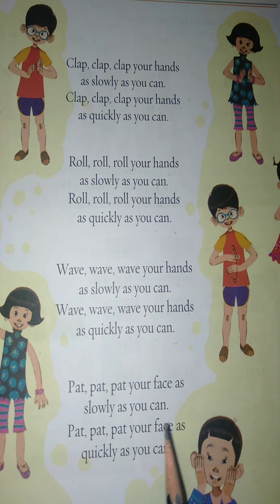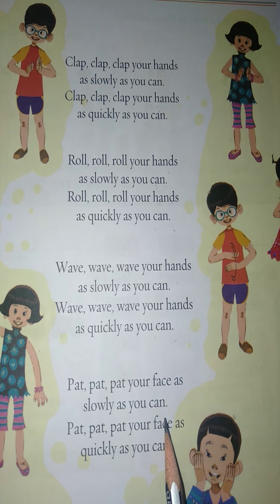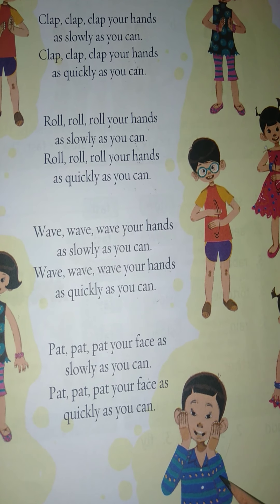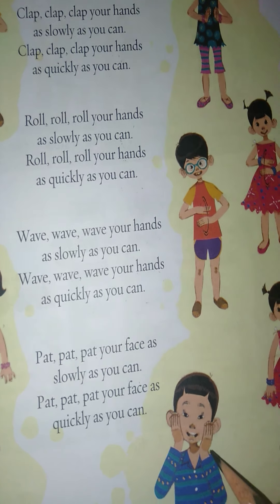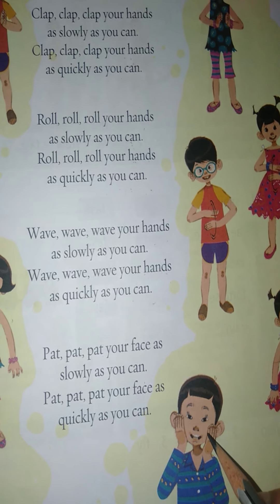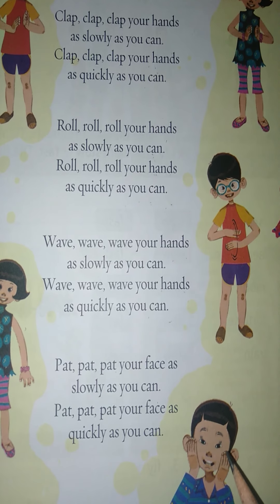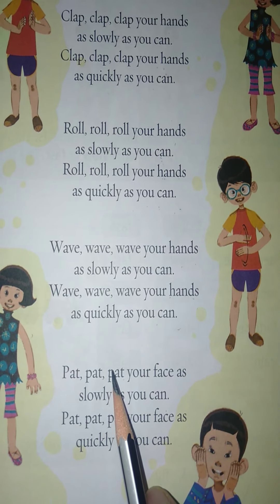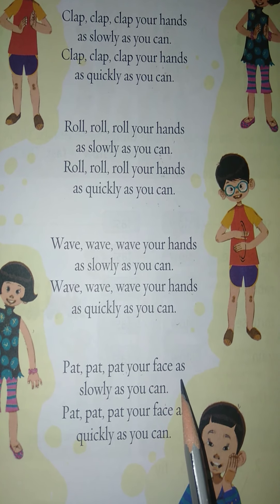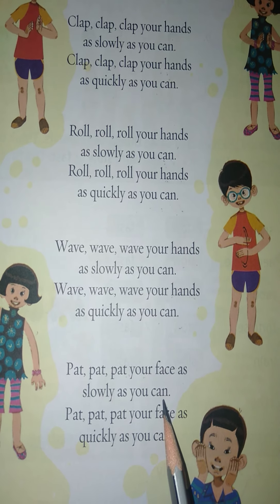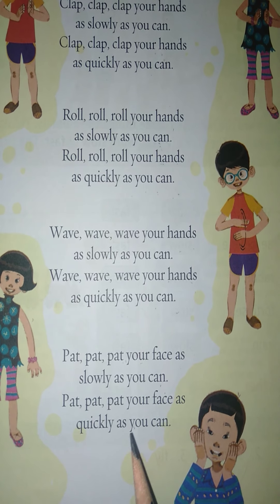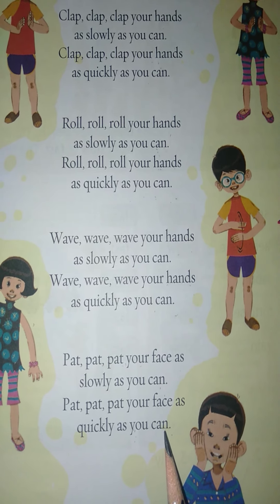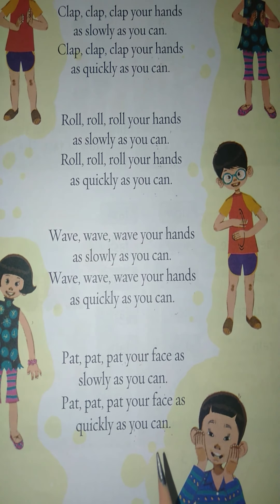Pat, pat, pat your face as slowly as you can. This is the patting action — he is patting on his face. So you will have to read: pat your face very slowly. And then in the next line he says pat your face as quickly as you can.